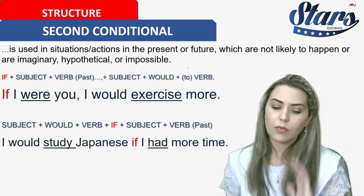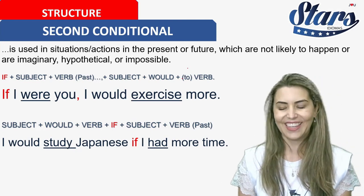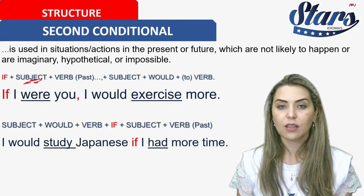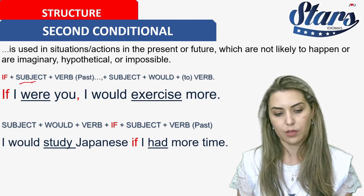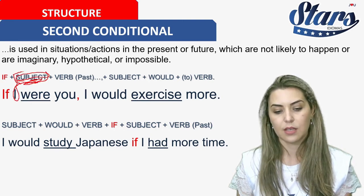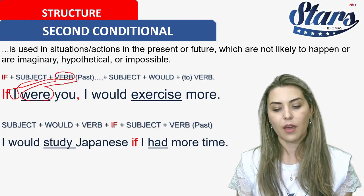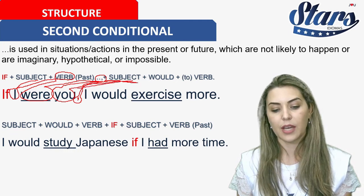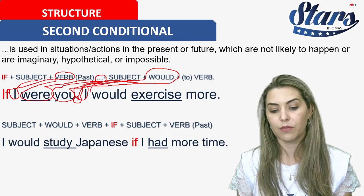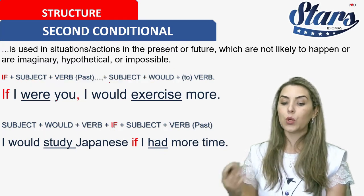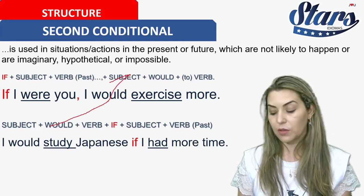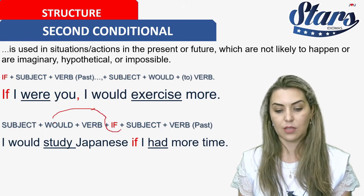This is the structure. You need to know what is subject, verb, subject plus 'would.' Subject here is 'I.' The verb is 'were.' Then there is a comma, and here you have the other subject 'I' again, plus 'would,' and then 'exercise' which is the main verb. That is the structure.